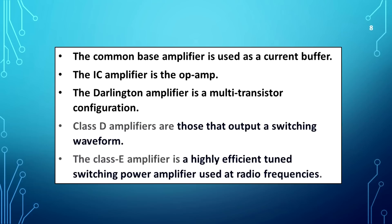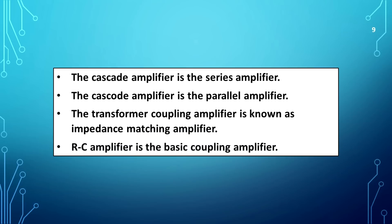Class D amplifiers output a switching waveform. Class E amplifier is a highly efficient tuned switching power amplifier used at radio frequencies. The cascode amplifier is the series amplifier. The cascaded amplifier is the parallel amplifier. The transformer coupling amplifier is known as the impedance matching amplifier.